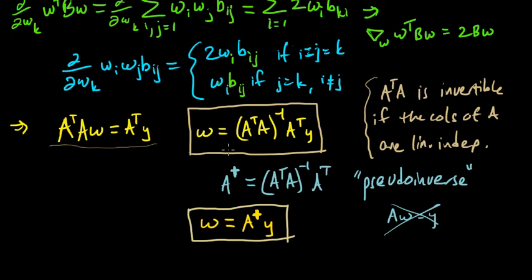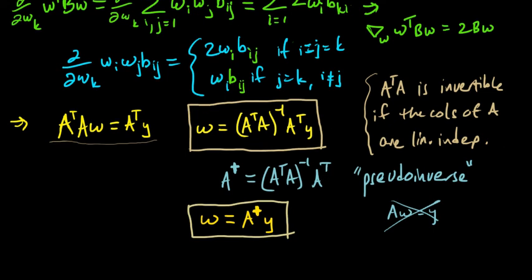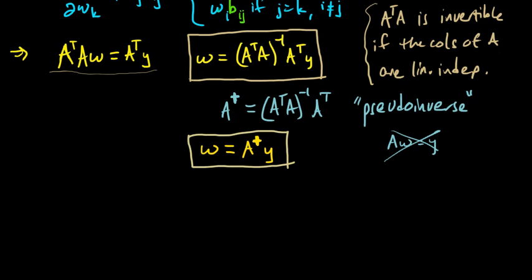We got a critical point. Now let's show that it's a minimum, which will show that it's a maximum of the log likelihood and therefore a maximum of the likelihood. To show that we have a minimum in a multivariable problem, we need to take the Hessian — the matrix of second derivatives.